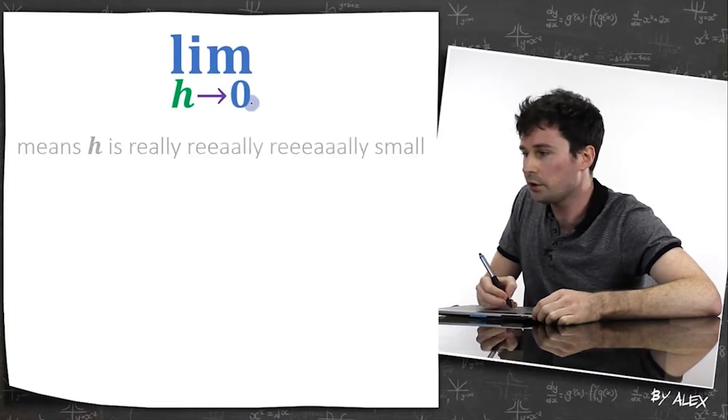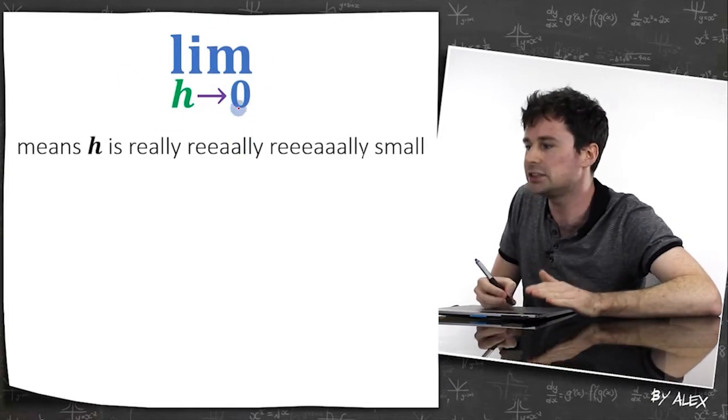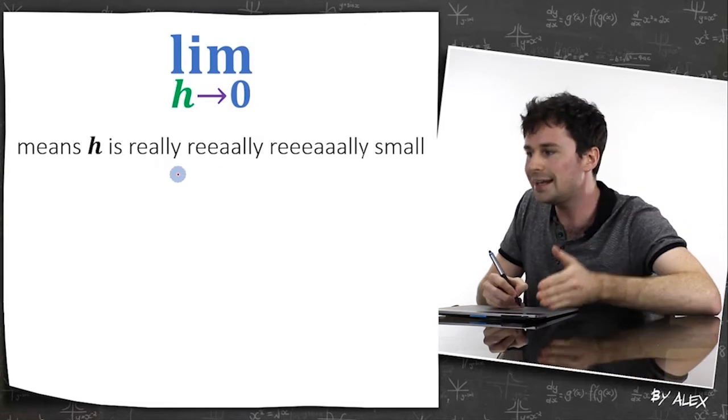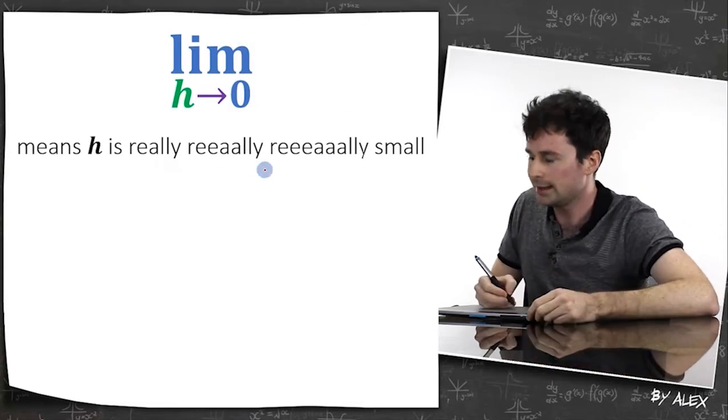Lim of h as it goes to zero, this just means h is really, really, really small. And let's have a look at why.